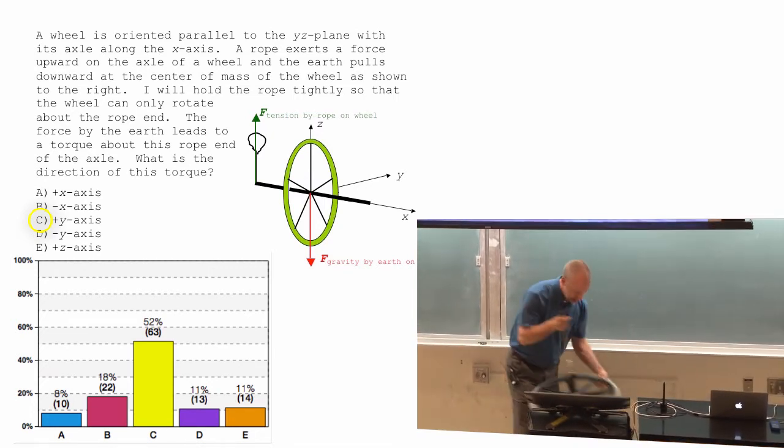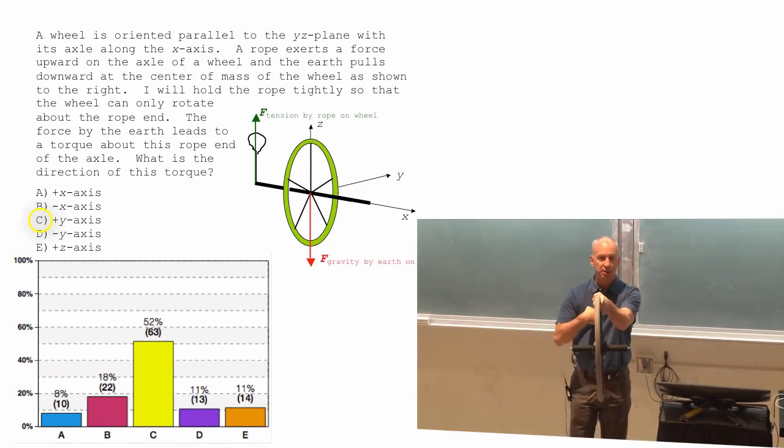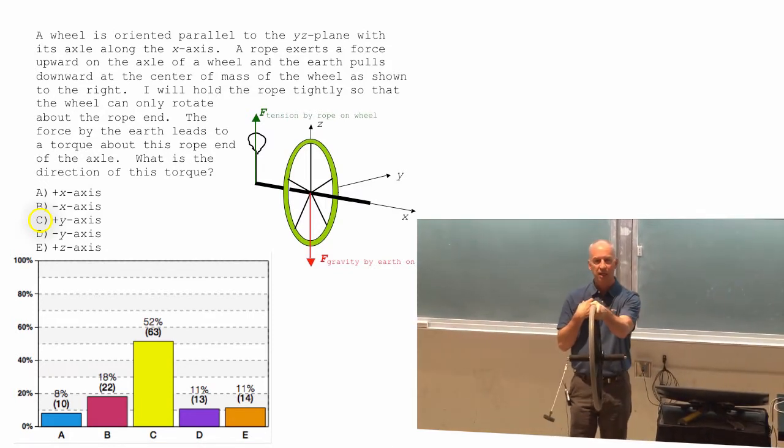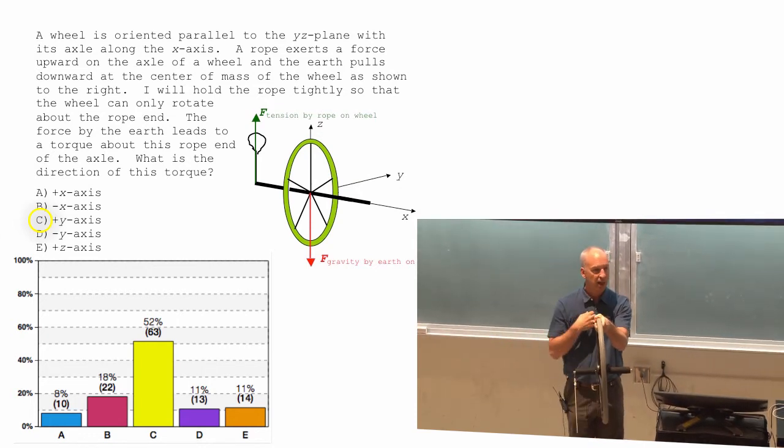So z is straight up, x is along this axis, and y is coming back this way. And so that's why the angular momentum vector ends up that way, because it rotates clockwise.